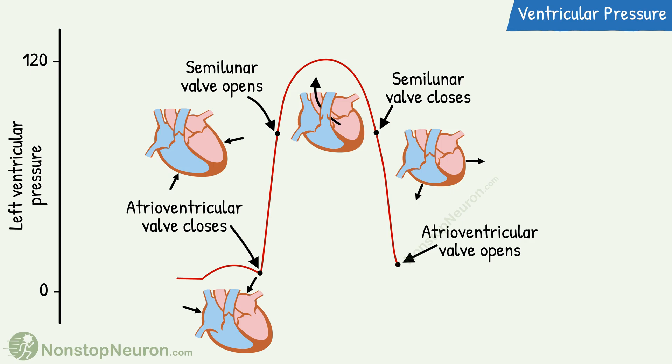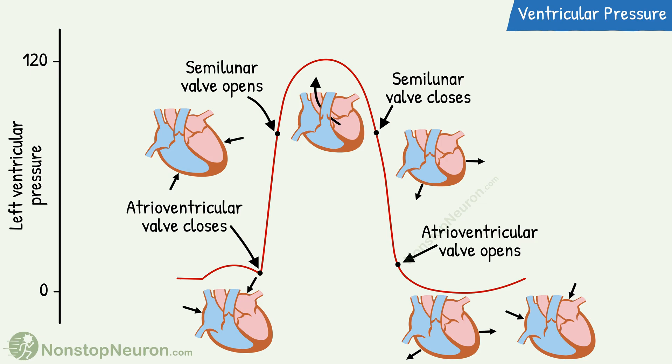At this point, the atrioventricular valves open and the ventricles start getting filled. During this, continued relaxation of the ventricles causes a fall in pressure. Then pressure gradually starts rising due to the continued flow of blood. This is one cycle. The next cycle begins with atrial contraction, which produces a rise in pressure as seen at the beginning.